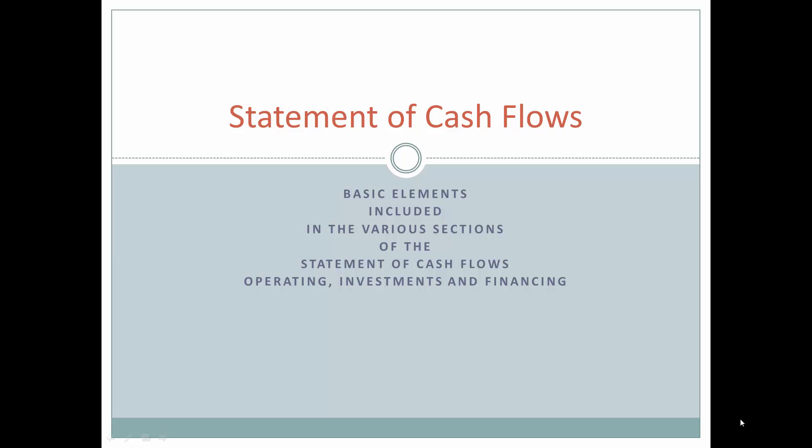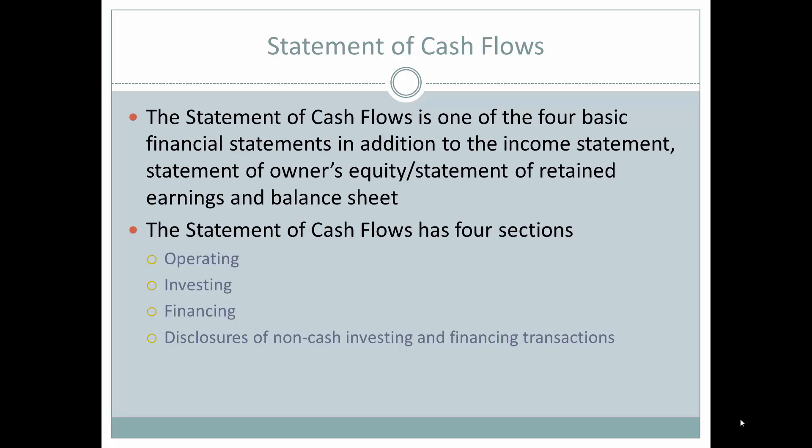The Statement of Cash Flows is one of the four basic financial statements, along with the Income Statement, the Statement of Owner's Equity or Statement of Retained Earnings, and the Balance Sheet. The Statement of Cash Flows has four sections: Operating, Investing, Financing, and Disclosures of Non-Cash Investing and Financing Transactions.